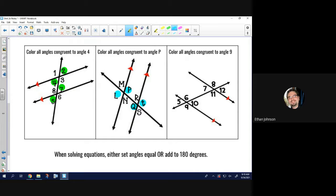Take a moment to do the third one. All angles congruent to angle 9. Angles that are congruent to angle 9 would be angle 6, they're vertical angles. Angle 11, they're corresponding angles. Angle 8, they are alternate exterior angles.